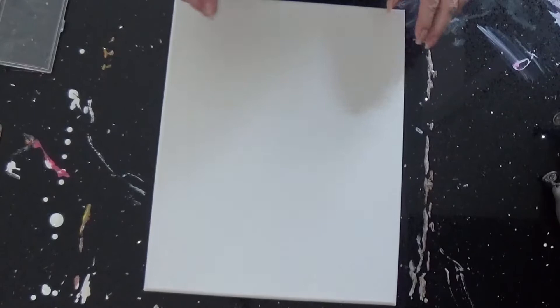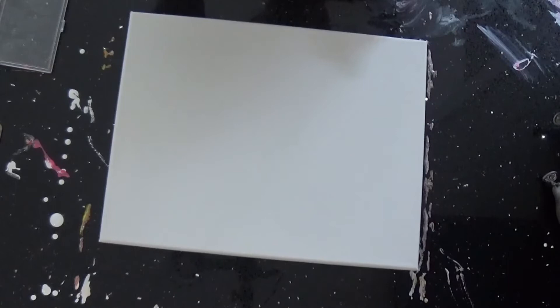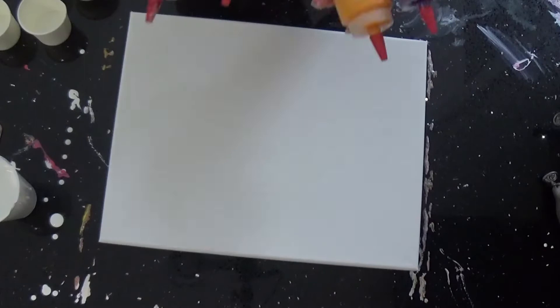I'm using a latex white satin house paint for my base coat. House paint's thinner than regular acrylics, so I just added probably 30% floetrol, and that's about it.